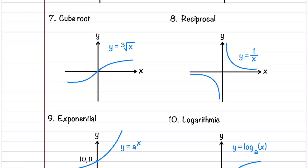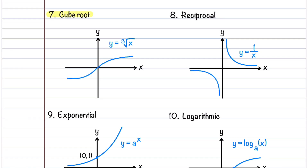The seventh function is the cube root function, described by the equation y = ∛x. This function is the inverse of the cubic function. It's an odd function and, just like the cubic function, it's symmetric about the origin. It's defined for all values of x.